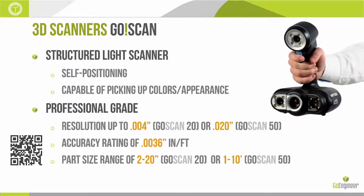The first scanner in the CreaForm lineup is the GoScan. It's a structured light scanner that projects a light pattern similar to a QR code, which shifts along the surface of a part to give you an accurate surface. These scanners can also pick up colors and texture, which is why the GoScan is so popular in archaeology. It's a professional-grade 3D scanner that produces accurate, high-quality scans. Resolution goes up to 4 thousandths of an inch for the GoScan 20, or 20 thousandths of an inch for the GoScan 50. Accuracy is just over 3.5 thousandths of an inch, plus or minus. The recommended part size is 2 to 20 inches for the GoScan 20, or 1 to 10 feet for the GoScan 50.